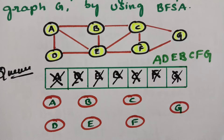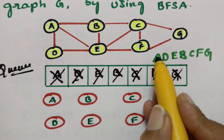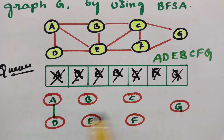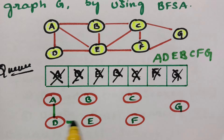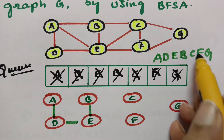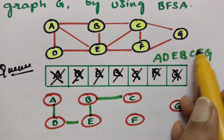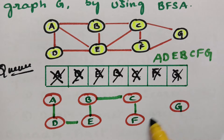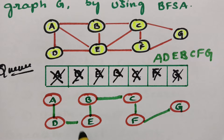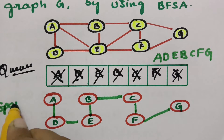Now we need to build the spanning tree from this. A to D — there is a connection. D to E. E to B. B to F. B to C. C to F. And F to G. So this is nothing but the spanning tree.